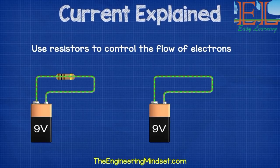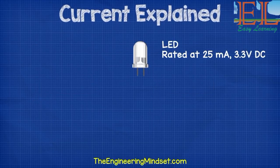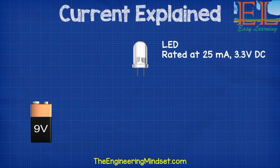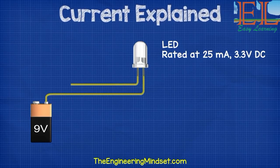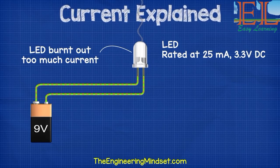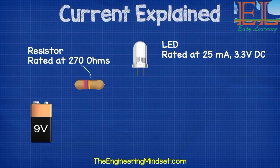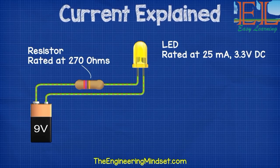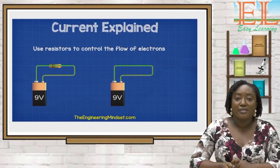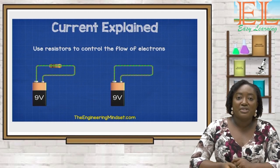A resistor slows down the electrons in the circuit. For example, an LED rated at 25 milliamps and 3.3 volts connected to a 9-volt battery would burn out because it can't handle that much voltage and current. To prevent this, we place a resistor into the circuit — in this case a 270-ohm resistor — to bring the voltage and current down to a safe level for the LED. As the video showed, the resistor protected the LED from burning out.